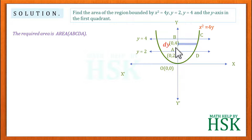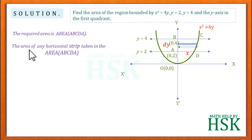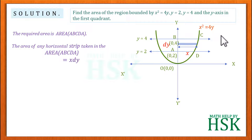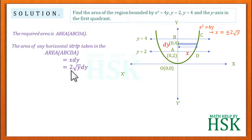Each strip can be considered as a rectangle whose width is dy and whose length goes from the y-axis to the curve, which is x. So the area of any elementary horizontal strip is x·dy. Since x² = 4y, we get x = ±2√y. As we are integrating along the positive axis, we take x = 2√y, so the area of the elementary strip is 2√y·dy.